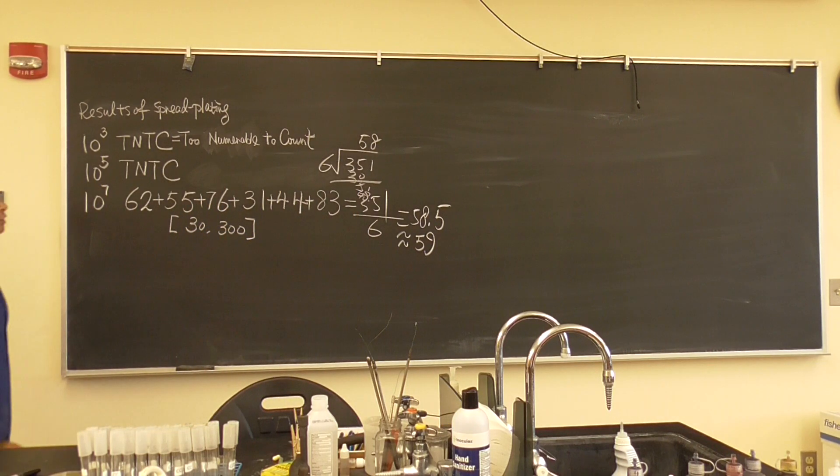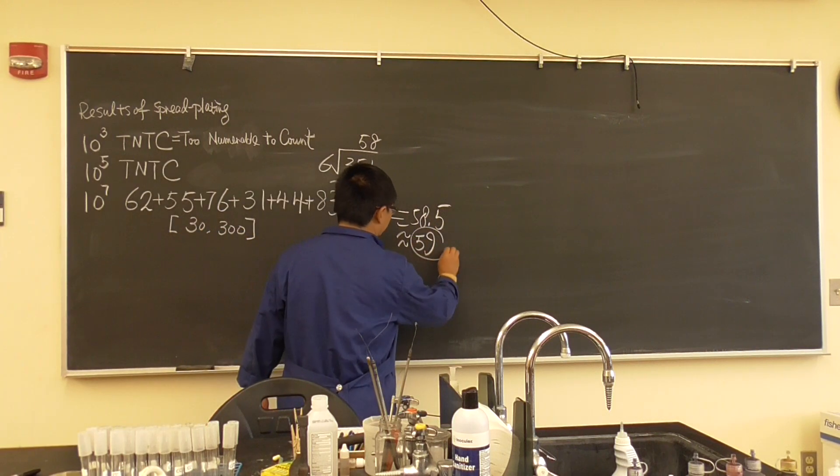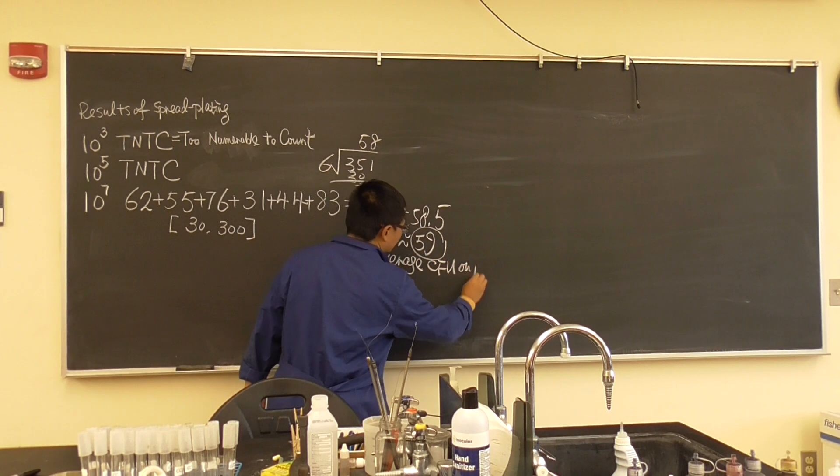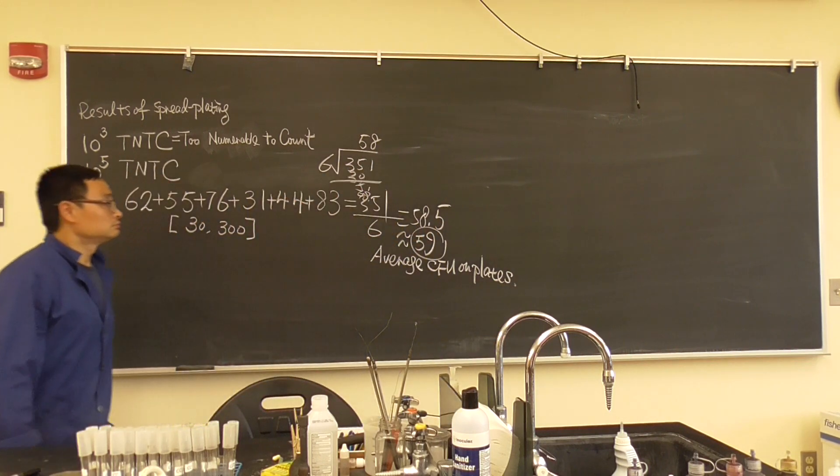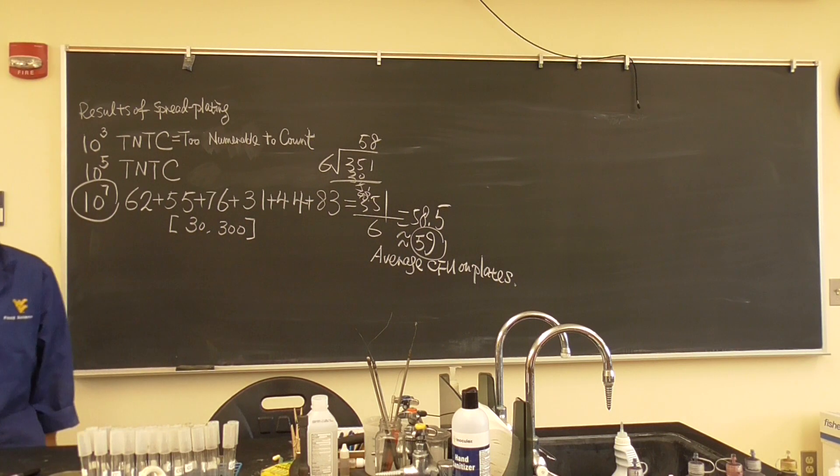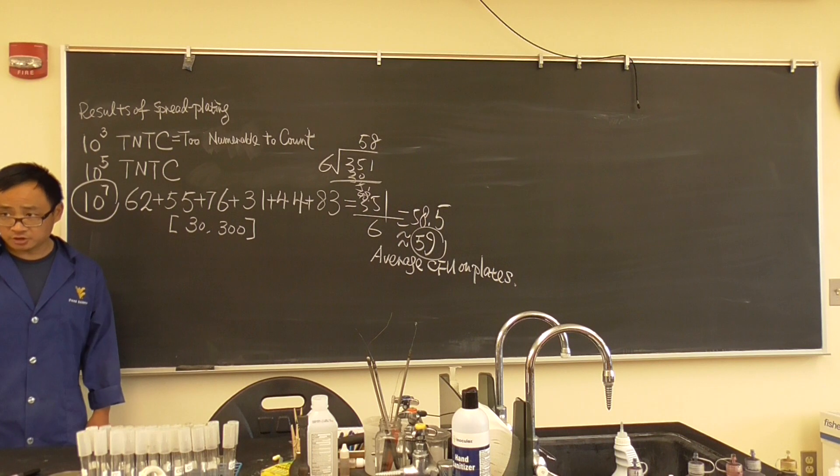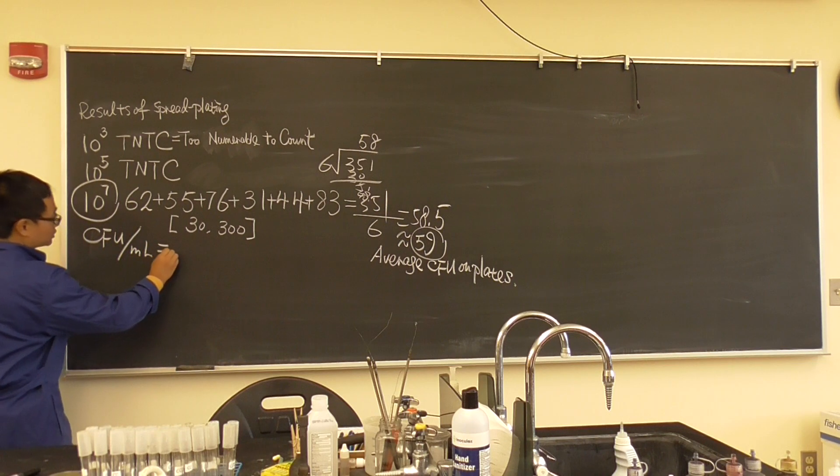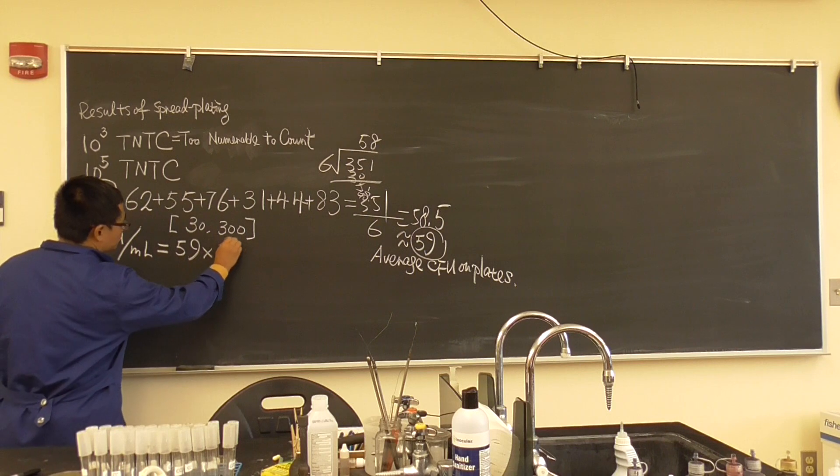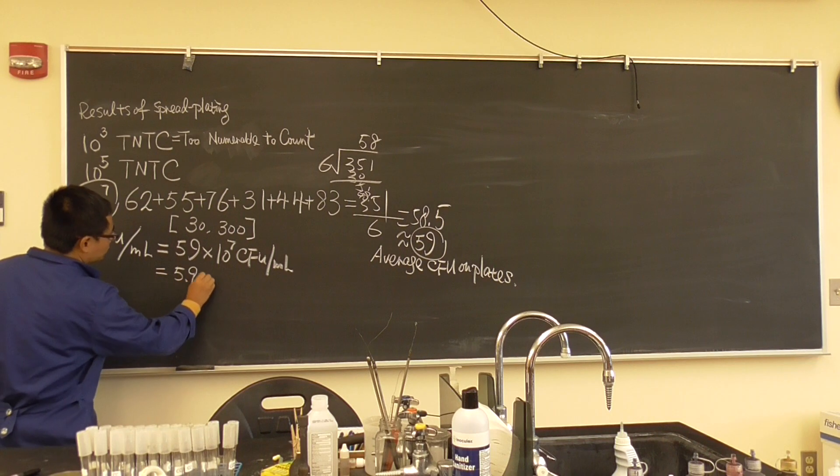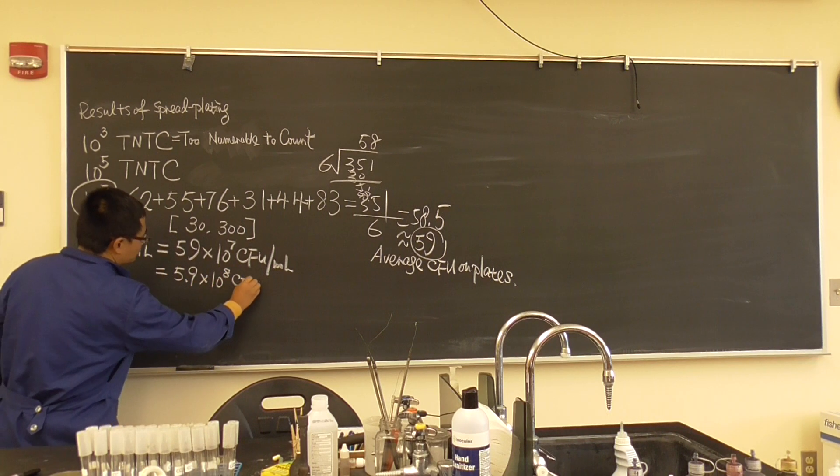So I read approximately 59. So what's the total population? This is the average CFU on plate. What is your dilution factor? 10 to the 7, is that right? And this is the final dilution factor of the plates. So how many total concentration of the bacteria? Remember, what we are talking about is CFU per ml equals 59 multiplied by 10 to the 7 CFU per ml. That equals 5.9 multiplied by 10 to the 8 CFU per ml.